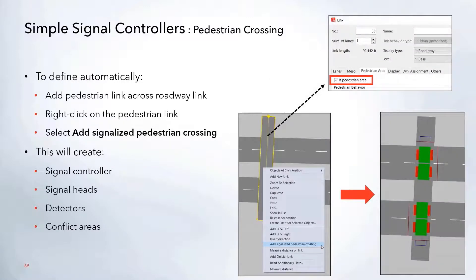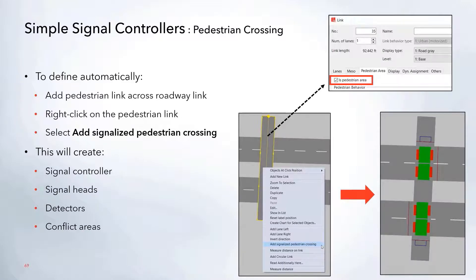A really nice feature added in 2020 is the ability to define pedestrian crossings automatically. You just draw a link across your roadway for pedestrians as normal, set it to be a pedestrian area, then right-click and select 'Add Signalized Pedestrian Crossing.' This automatically creates all the required objects — the signal controller, signal heads, detectors, and conflict area. You can then go into the signal controller and edit any of the default times.